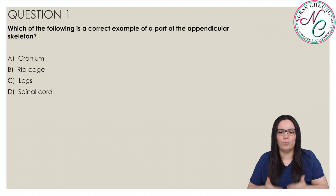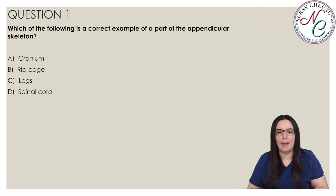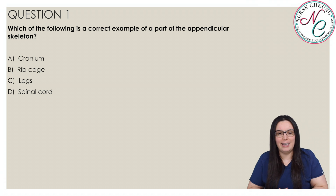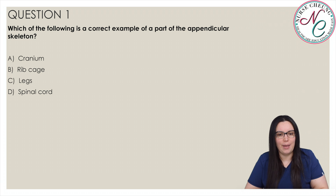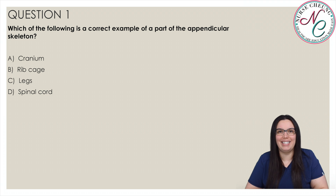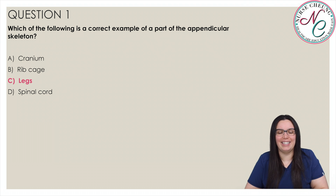Which of the following is a correct example of a part of the appendicular skeleton? Is it A, the cranium; B, the rib cage; C, legs; or D, spinal cord? And the correct answer is C, legs.